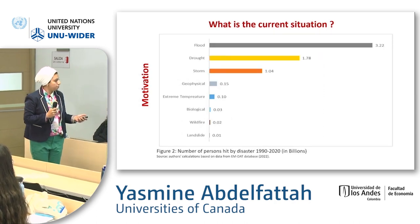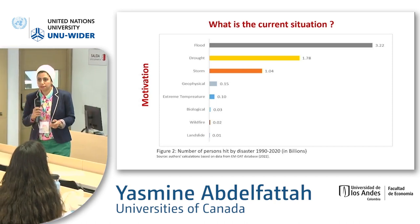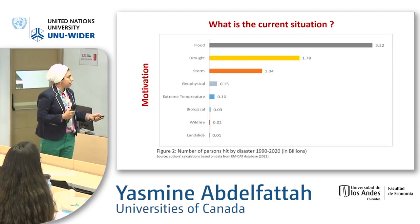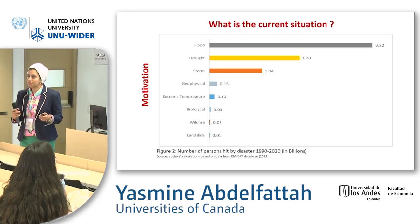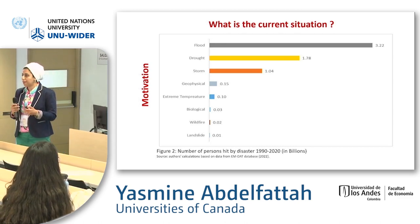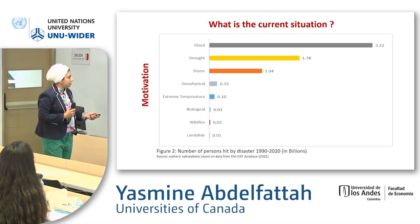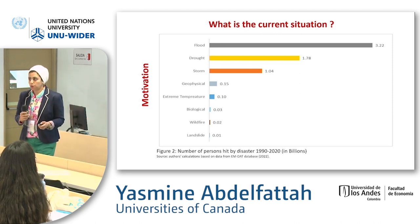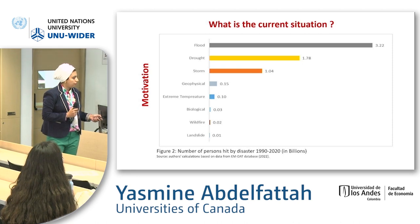Now looking at the number of people hit — which includes death tolls plus people affected — we still have flood at the top, but drought moves from seventh to second. What's happening in Pakistan is a clear example of how devastating drought can be. Then we have storm, and geophysical, which includes earthquakes and volcanoes, sits fourth — consistent with its frequency ranking.